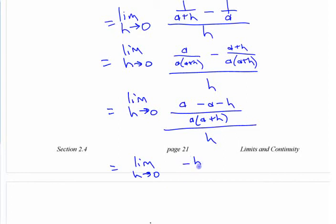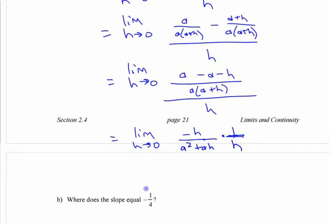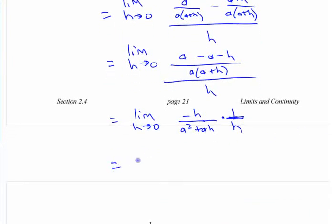So we have negative H over, and you can multiply it out if you want, A squared plus AH times 1 over H. I'll put that divided by H over here just to make it easier. How does that help? What can we do now? Yeah, the H's are going to simplify now, right, or divide out. So we have negative 1 over A squared plus AH, right?